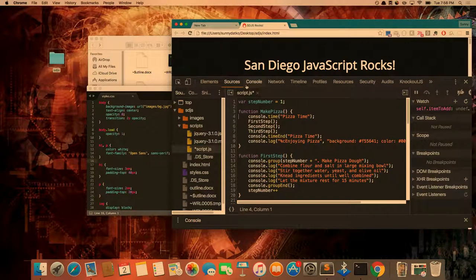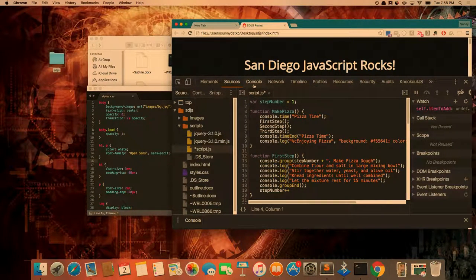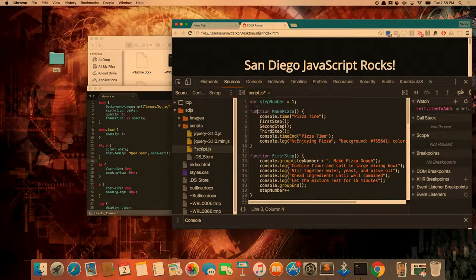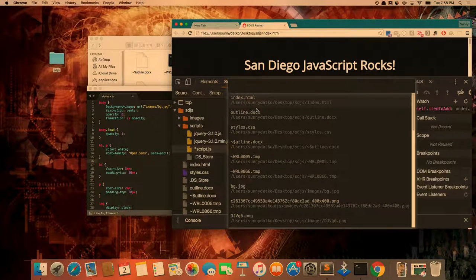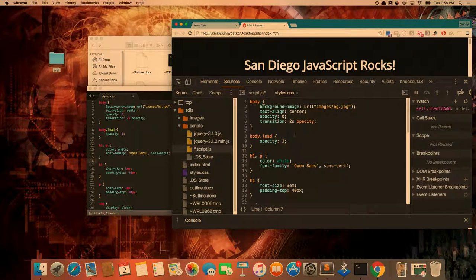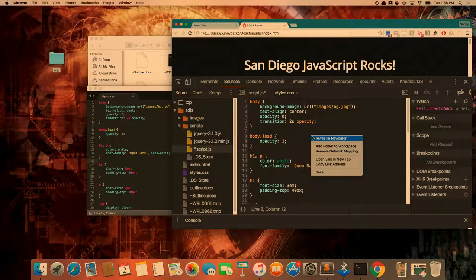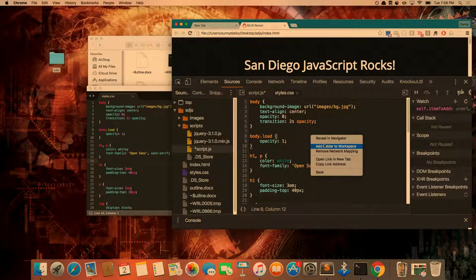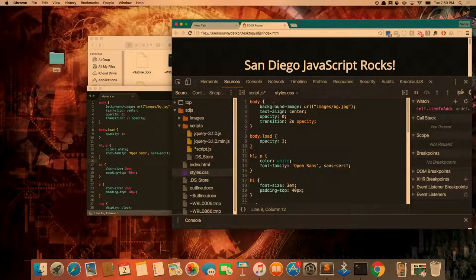And just a couple other quick goodies. I discovered this one earlier this week. Oftentimes in the sources tab, I found myself spending a lot of time looking for particular files in the tree. I discovered you can actually hit command O and just search for files. So if I wanted to look for styles, I could go right to it. And if you want to find the place where this is in your tree, you can go to Reveal in Navigator and it'll take you right there. And that's it. That's my talk.